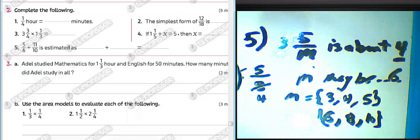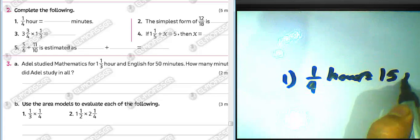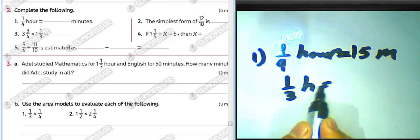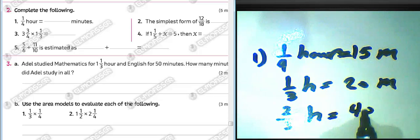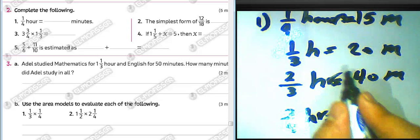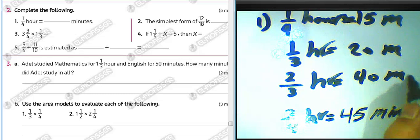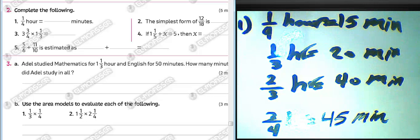Complete the following: three-quarters of an hour equals how many minutes? Multiply by sixty. One quarter hour equals fifteen minutes. Two thirds of an hour equals forty minutes. Three quarters of an hour equals forty-five minutes. You must know all these conversion facts.